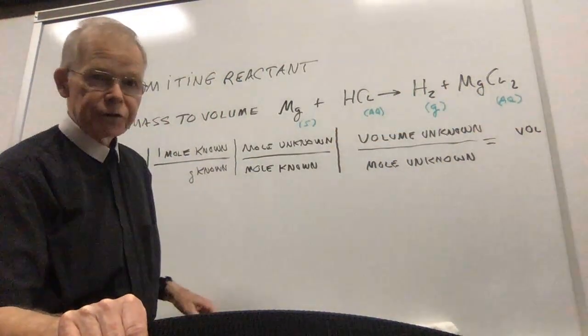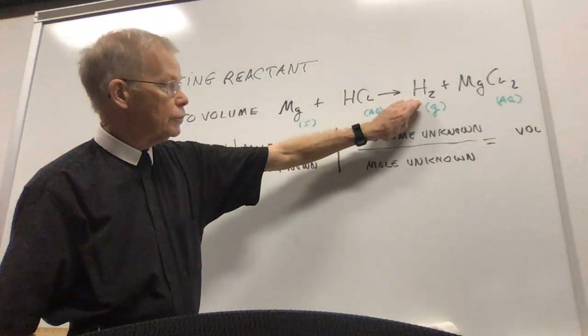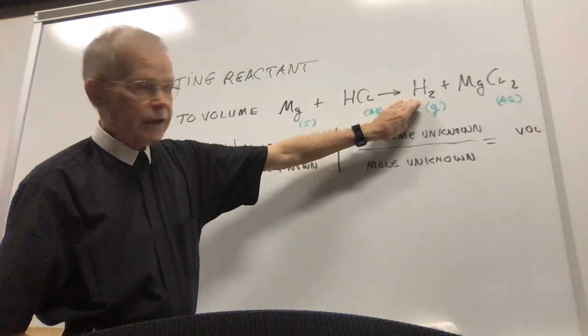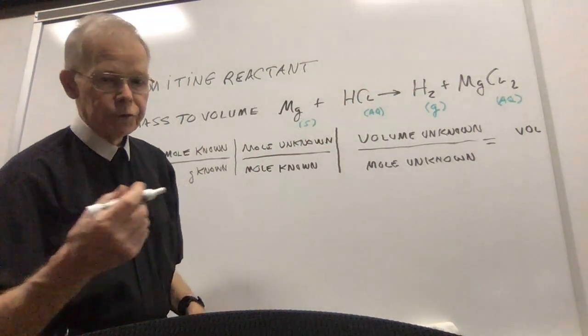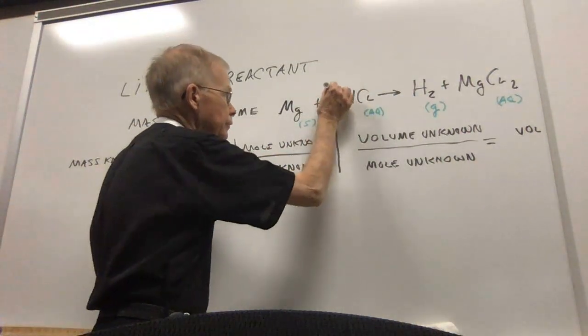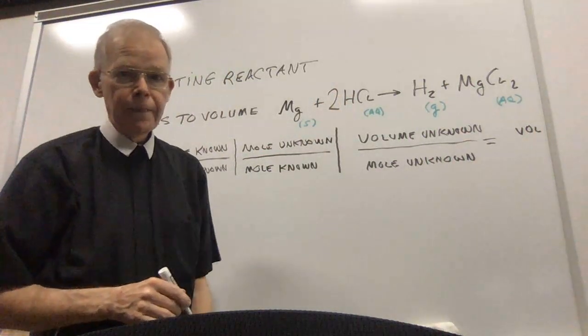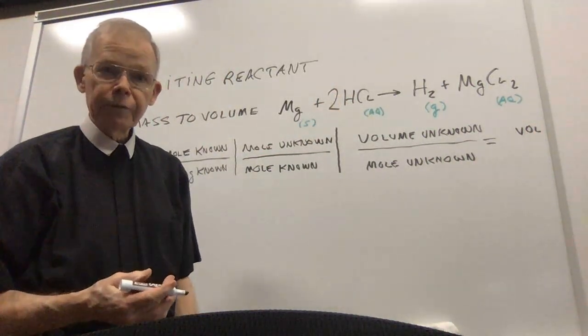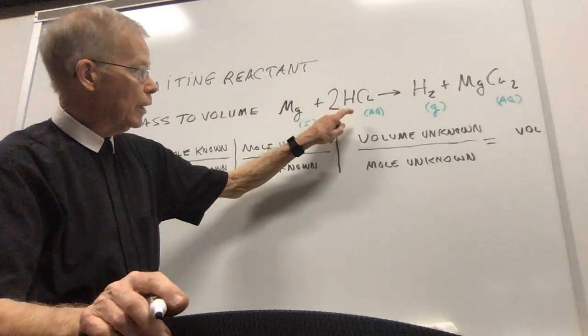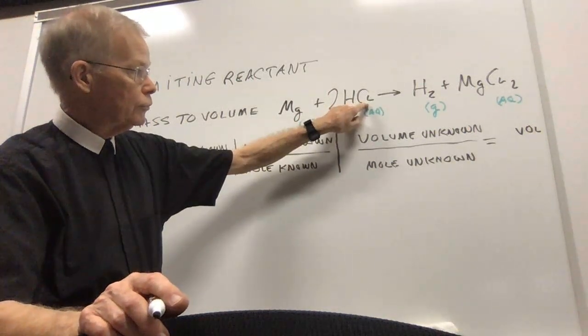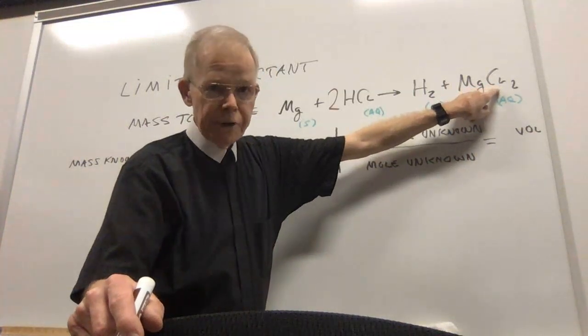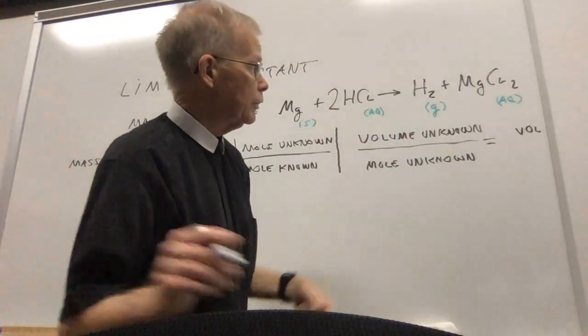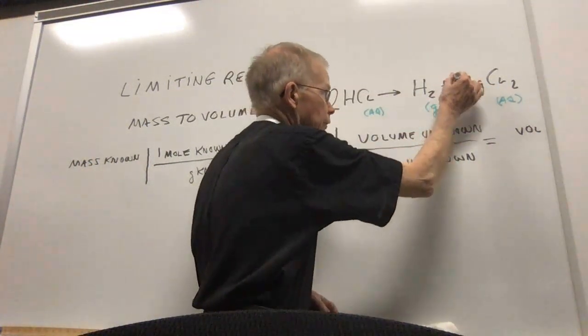Now, let's balance the equation. I've got two hydrogens on the product side. I need to have two over here. Let me put a coefficient of 2 in front of the hydrogen. Now, I've got two hydrogen chloride molecules, but by putting that 2 in front, I also have two chlorides, and when I go over here, there's already two chlorides, so all I need to do is put a 1 in front of the magnesium chloride.